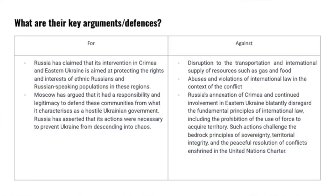Here are some key arguments for Russia's invasion of Ukraine. First, protection of the Russian-speaking population: Russia has claimed that its intervention in Crimea and Eastern Ukraine is aimed at protecting the rights and interests of ethnic Russians and Russian-speaking populations in these regions. Moscow has argued it has a responsibility to defend these communities from what it characterizes as a hostile Ukrainian government. Russia also maintains its annexation of Crimea as the result of a legitimate referendum, and has emphasized historical and cultural ties between Russia and Ukraine, particularly in Crimea and Eastern Ukraine, to justify its involvement.